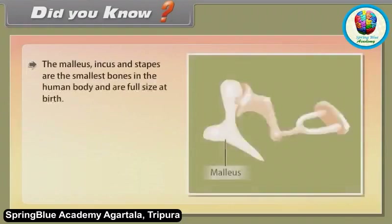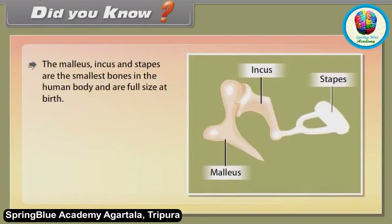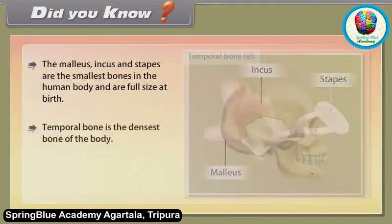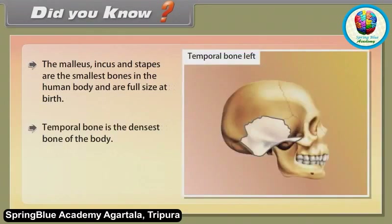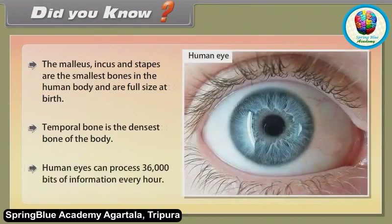Did you know? The malleus, incus, and stapes are the smallest bones in the human body and are full size at birth. The temporal bone is the densest bone of the body. Human eyes can process 36,000 bits of information every hour.